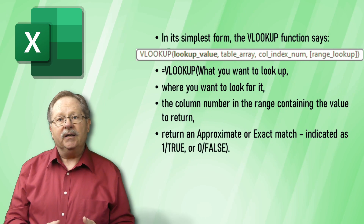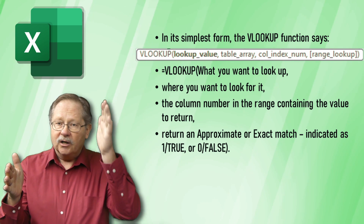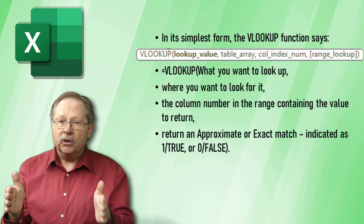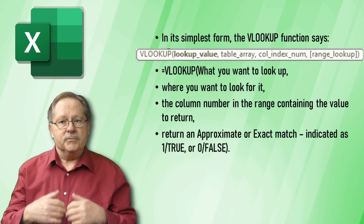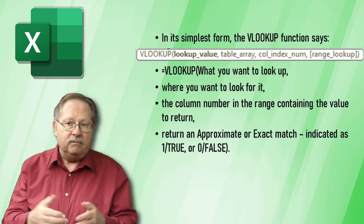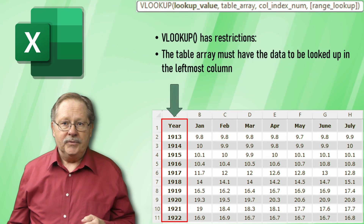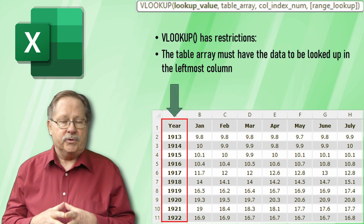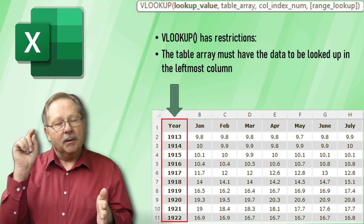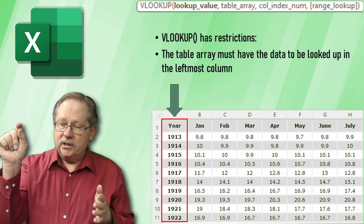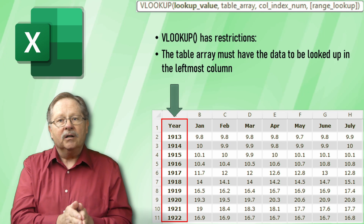So a lot of times it'll be several columns and several rows. The column number then is the column to the right in your array. The far left column has to be what you're looking up, and the column that you want the data found in is numbered from left to right. Then you choose whether you want to return an approximate value or an exact match. So VLOOKUP has these basic restrictions — the column has to be on the left for what your lookup value is looking for. So if my lookup value is a year, say 1916, then 1916 has to be in that far left column.